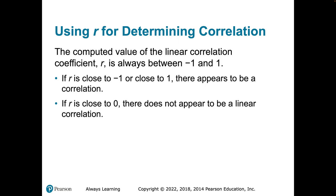A couple of facts about the linear correlation coefficient: the value is always between negative one and positive one. If the sign is negative, we have a negative relationship; if positive, a positive relationship. If r is really close to negative one or positive one, then there is a strong linear correlation. If r is close to zero, then there is not a linear correlation.